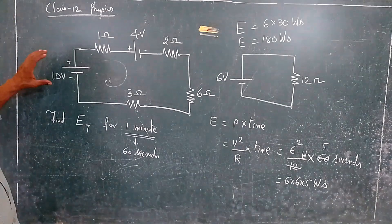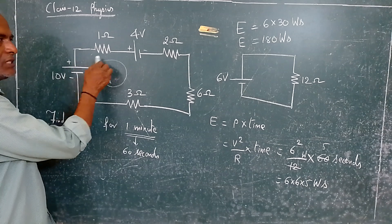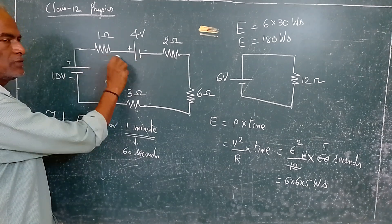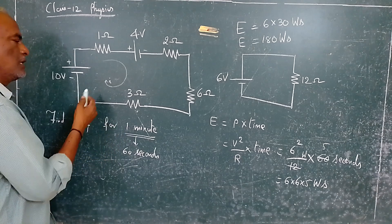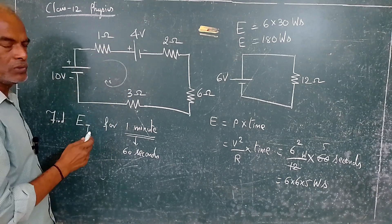Now we have two batteries, one sees a rise in potential and another sees a fall in potential. If you assume the current is flowing in clockwise, naturally it will flow clockwise because this 10 volts is greater than 4 volts.